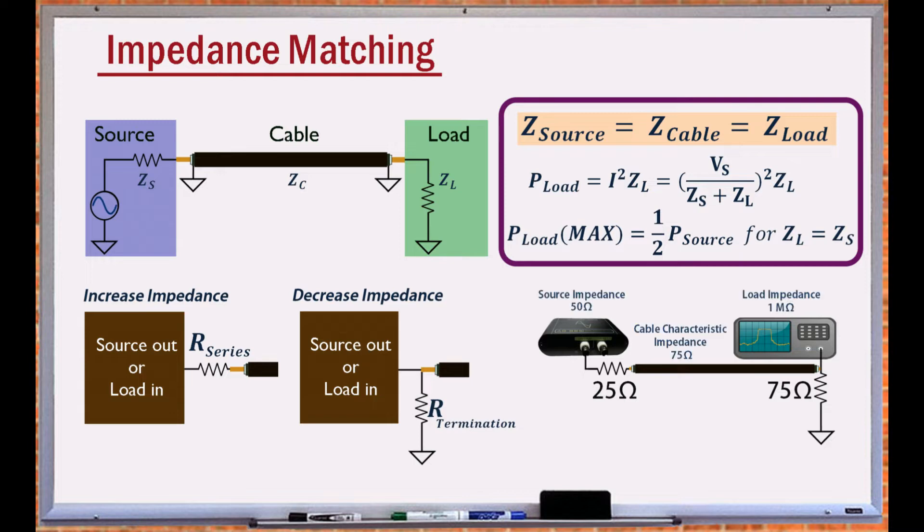This circuit matches the impedance of a signal generator with a source impedance of 50 ohms, and an oscilloscope with an input impedance of 1 mega ohms, to a cable with a characteristic impedance of 75 ohms.